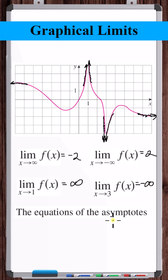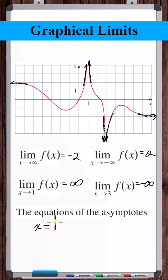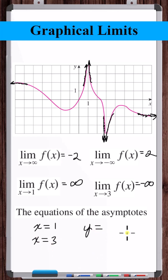The equations of the asymptotes — we've got two vertical and two horizontal asymptotes. The vertical asymptotes are x = 1 and x = 3. The horizontal asymptotes are y = -2 and y = 2.